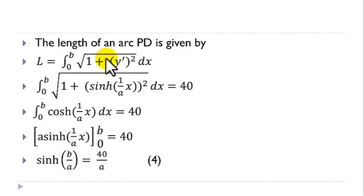Now, using the fundamental hyperbolic identity, we know that cosh squared b over a minus sinh squared b over a is equal to 1. So, that is 30 over a plus 1 squared minus 40 over a squared is equal to 1.